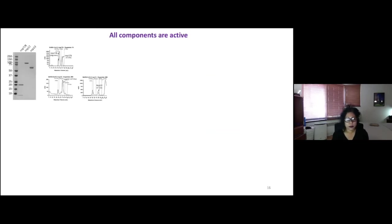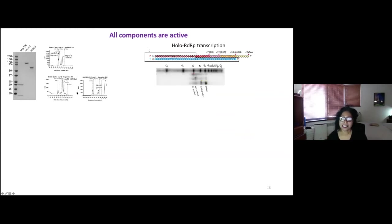So our group, what they did was they purified each of the components. We're just showing you here the purification, the final steps, the gel filtration columns. And then they tested that each component was active by doing transcription assays. And they showed the enzyme, the RDRP, holo RDRP, was active.